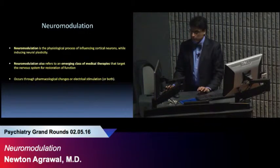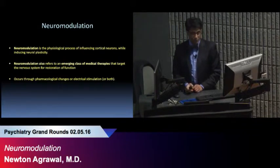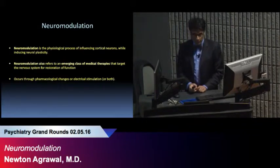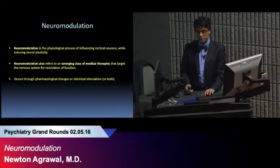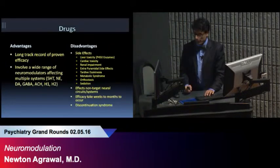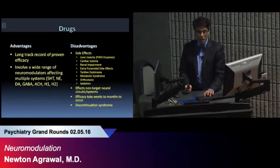Neuromodulation is the physiological process of influencing cortical neurons by inducing neuroplasticity. It's basically referring to an emerging class of medical therapies. The way it works is it can involve pharmacological changes or electrical stimulation or both. The disadvantages of medications is that they cause widespread side effects. These effects could affect the liver through P450 enzymes, there could be cardiac toxicity, renal toxicity, metabolic syndrome, and furthermore EPS.